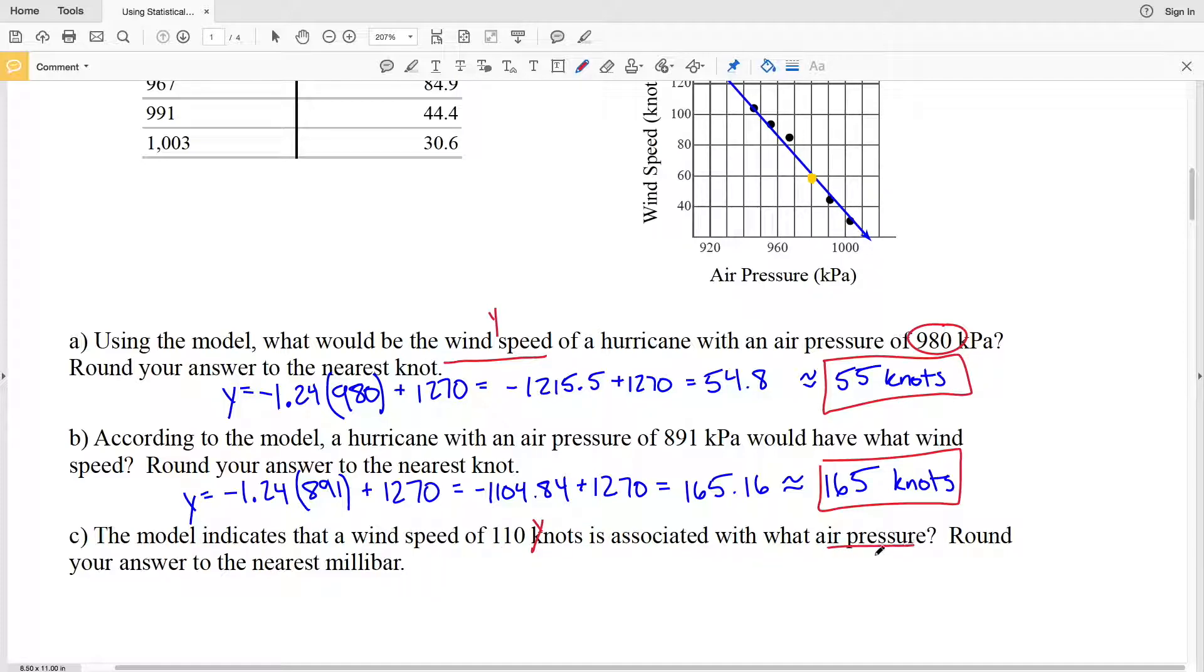Plugging in our Y value of 110, that's going to equal negative 1.24 times X, which is what we're solving for, plus 1270. We'll start by subtracting 1270 from both sides in order to isolate that term with X.